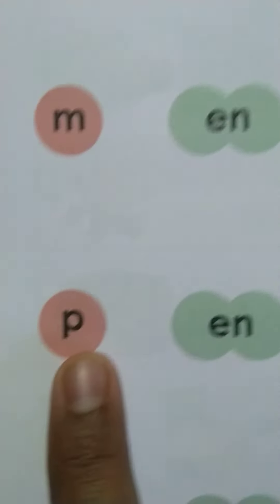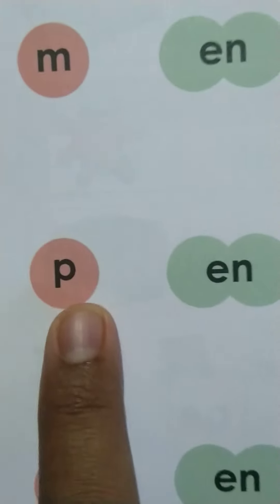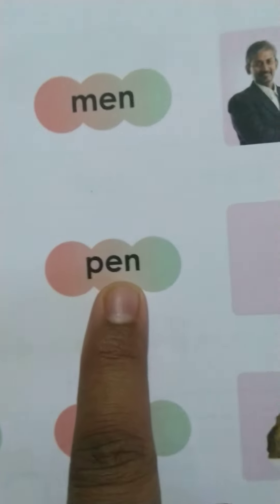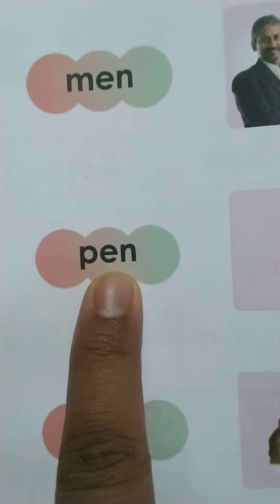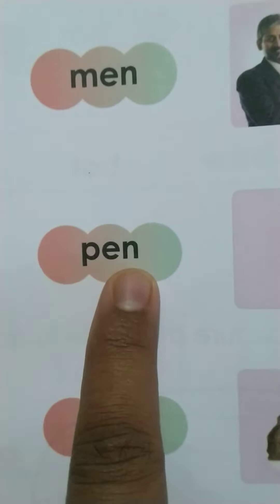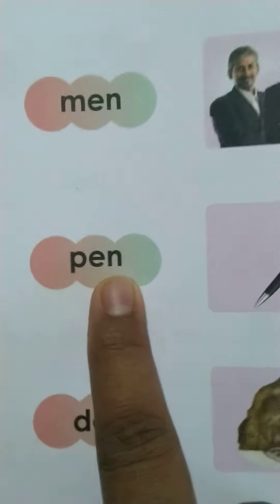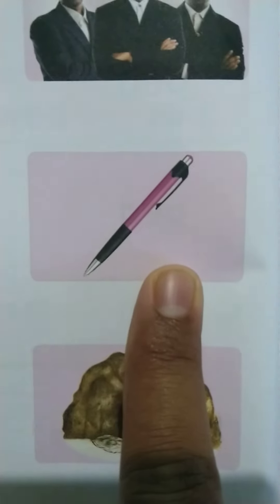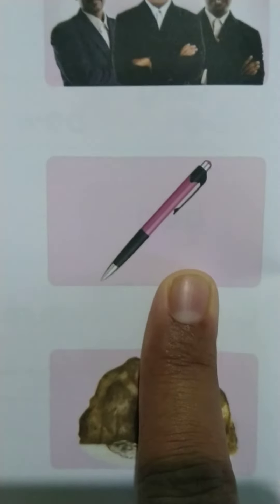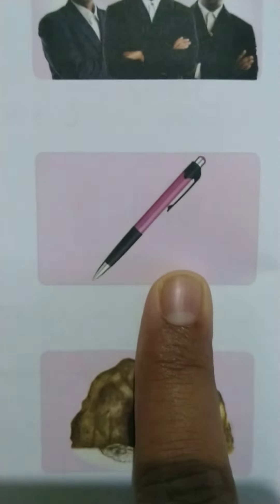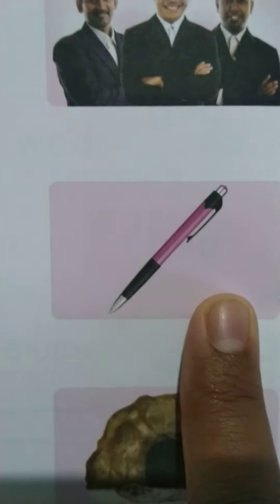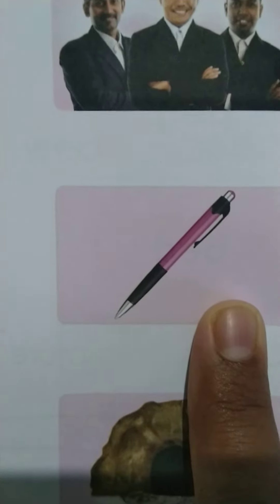Next is P, E, N: pen. Together here, P, E, N — pen. Pen is a thing used for writing something.